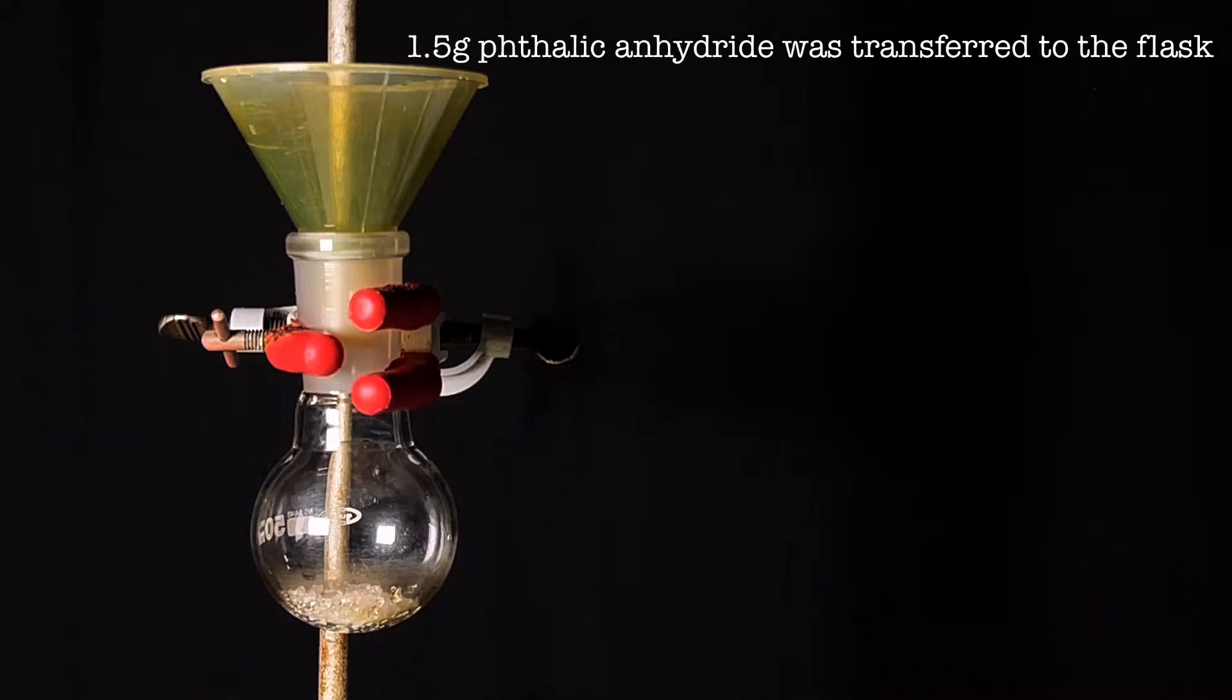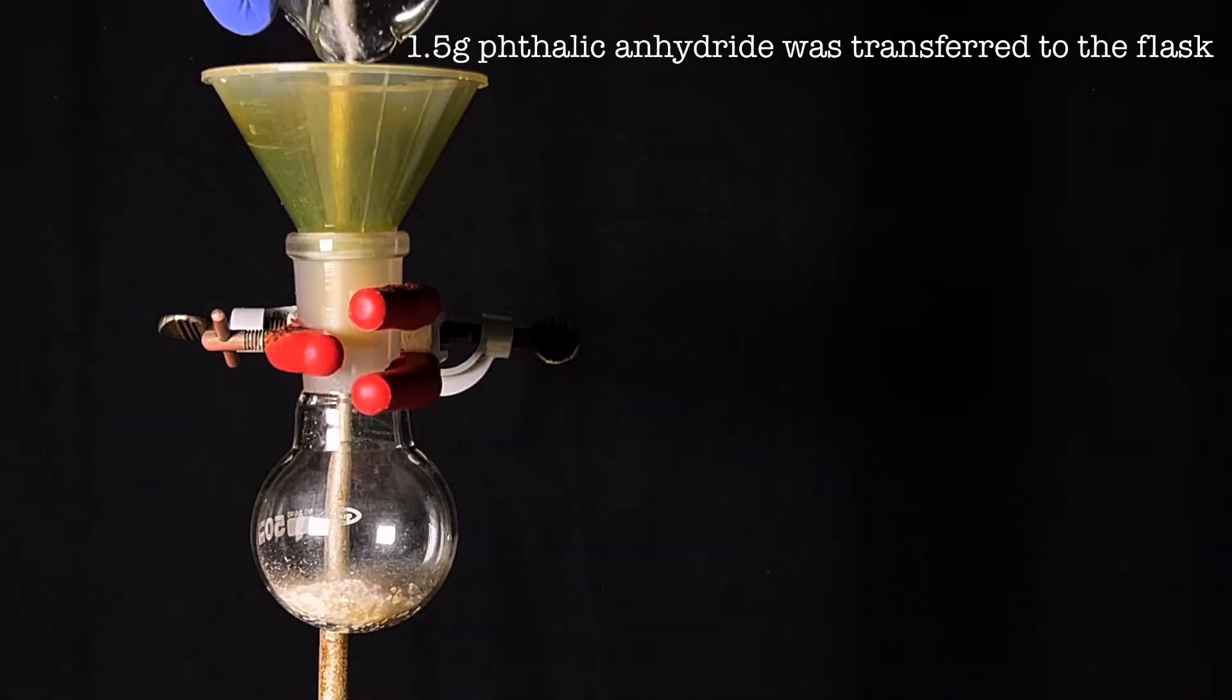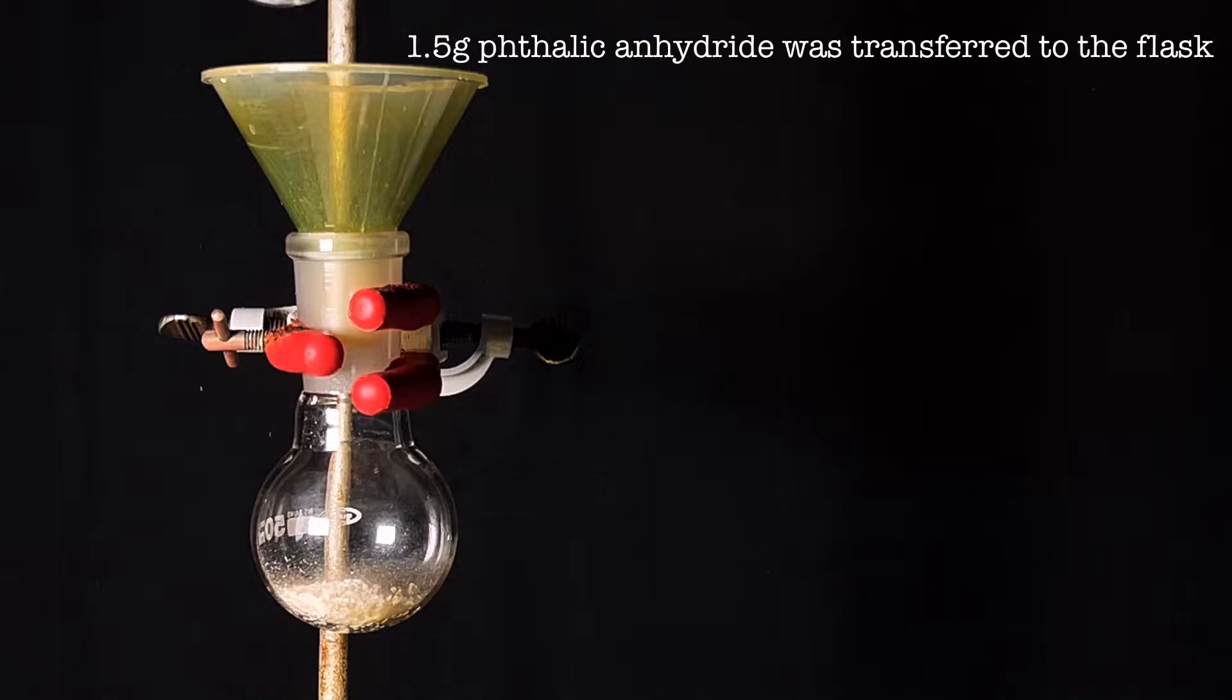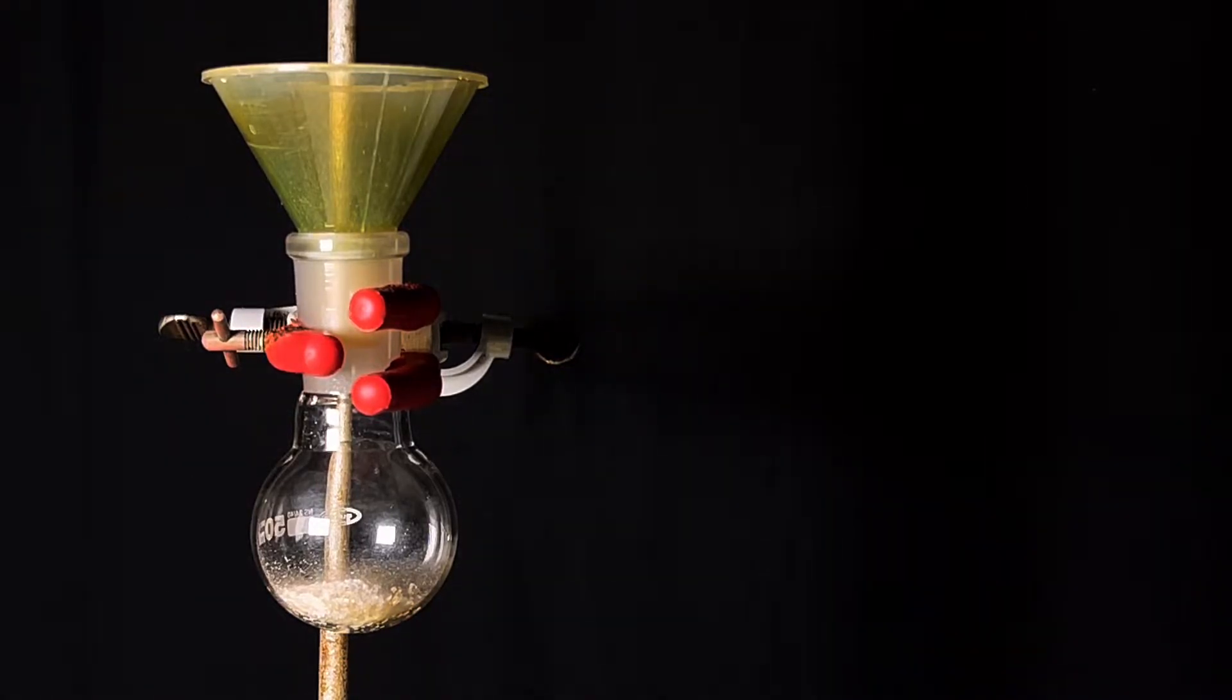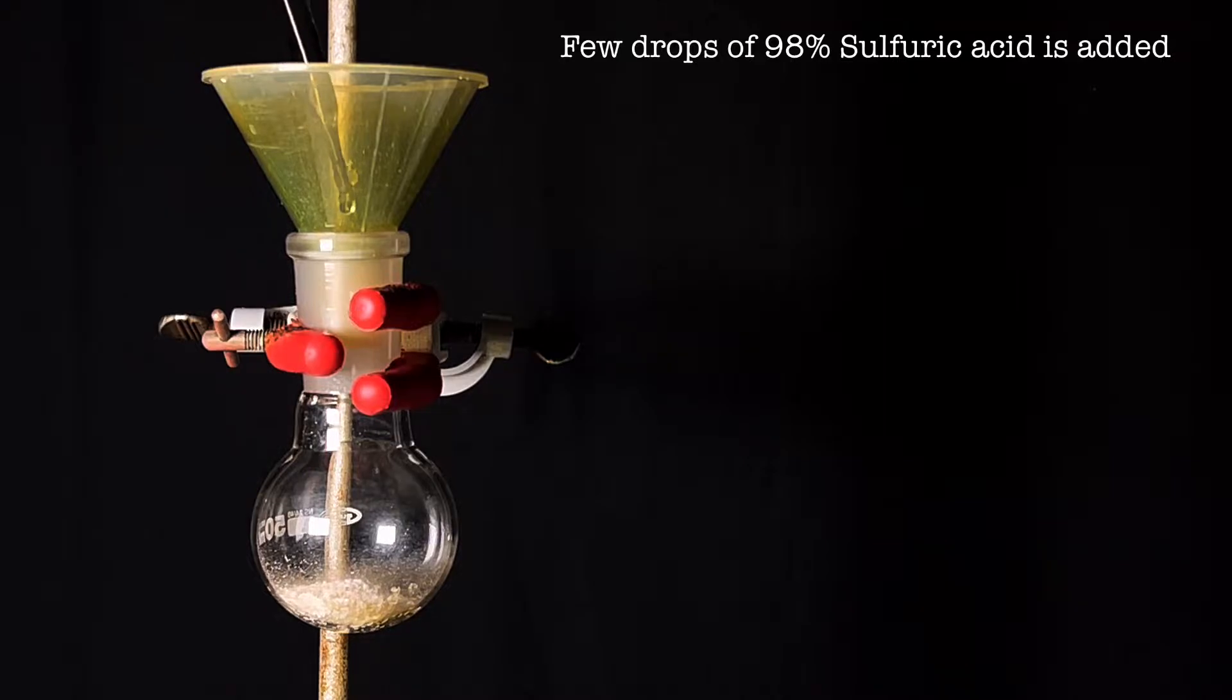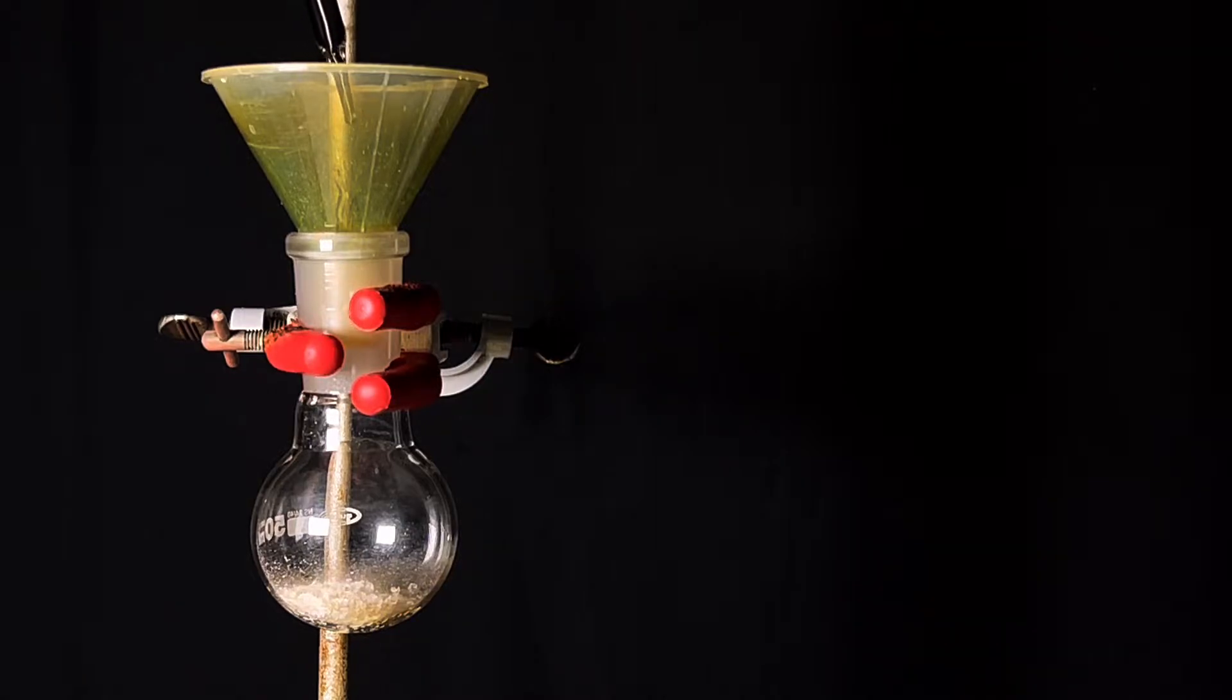Next, 1.5 grams of phthalic anhydride which was pulverized into a fine powder was added on top of the phenol. 3 to 4 drops of concentrated 98% sulfuric acid was added to the flask. Do not add too much sulfuric acid as that would char the reaction mixture and we will be left with carbon.